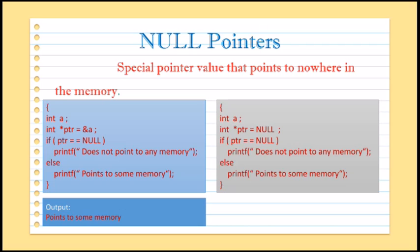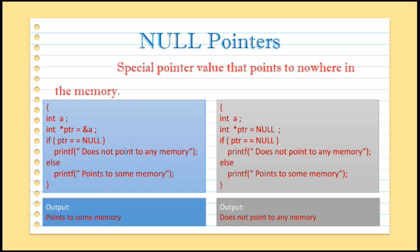Now in the next example we will initialize the pointer with value NULL. Here the condition is true, meaning ptr is a null pointer and it does not point to any memory location. Because the pointer is a null pointer, the true block will be executed. The output of this particular code will be from the printf statement in the true block: 'does not point to any memory location'. This indicates that it is a null pointer.